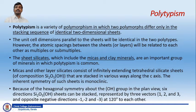The sheet silicates, which include the micas and clay minerals, are an important group of minerals in which polytypism is common. Micas and other layer silicates consist of infinitely extending tetrahedral silicate sheets of composition Si2O5(OH) that are stacked in various ways along the c-axis. The inherent symmetry of such sheets is monoclinic because of the hexagonal symmetry about the OH group.